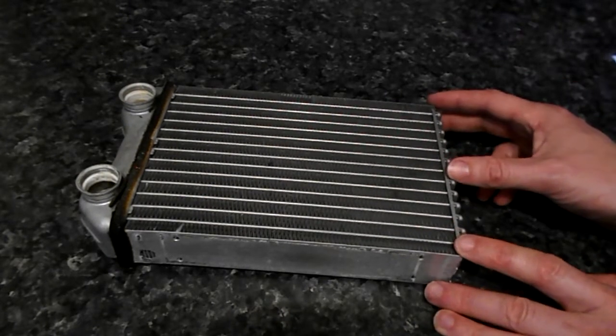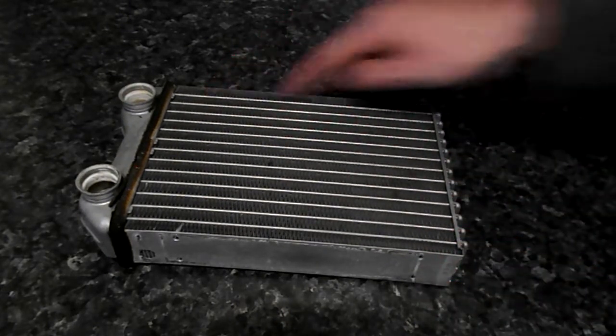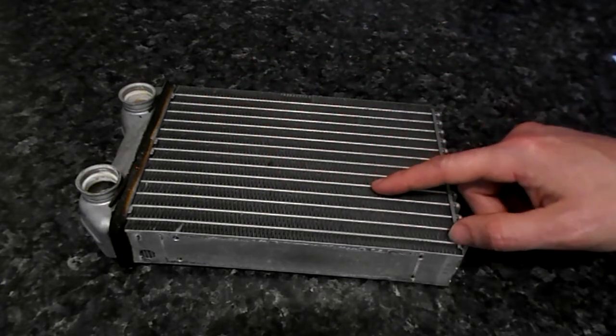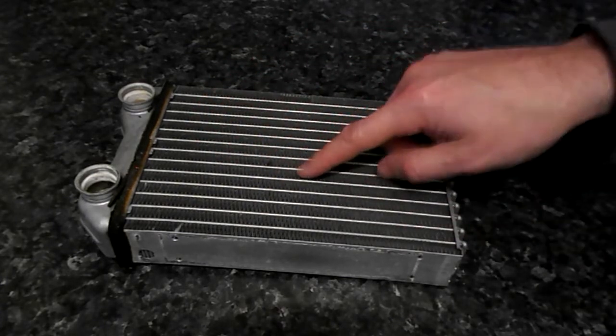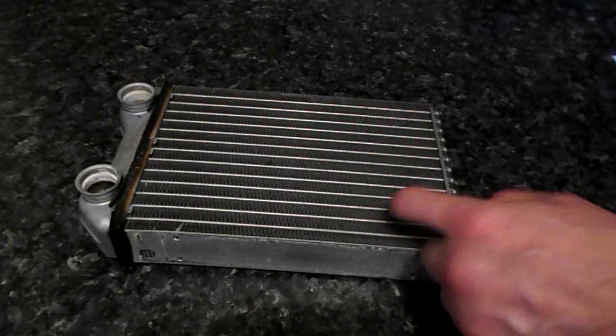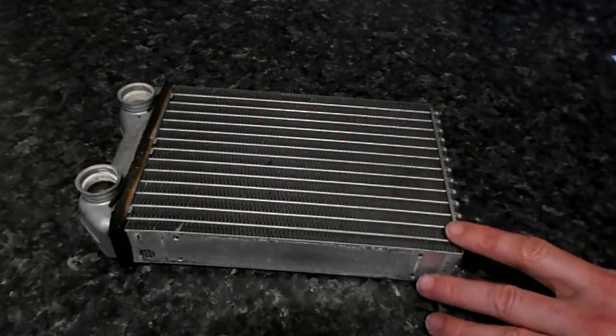Hot coolant from the vehicle's engine passes through the tubes inside the heater matrix, and the fins that you see here, the little small things, increase the surface area to transfer the heat to the air.